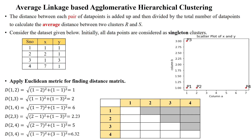Welcome to Average Linkage Based Agglomerative Hierarchical Clustering. Here, the distance between each pair of data points is added up and then divided by the total number of data points in both clusters to find the average distance between two clusters R and S, or C1 and C2.